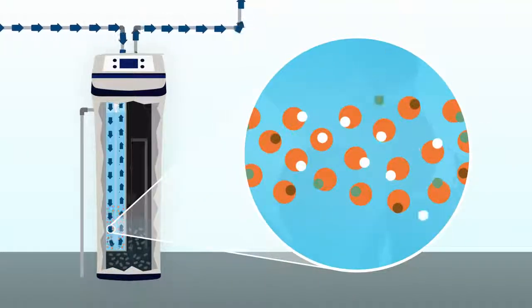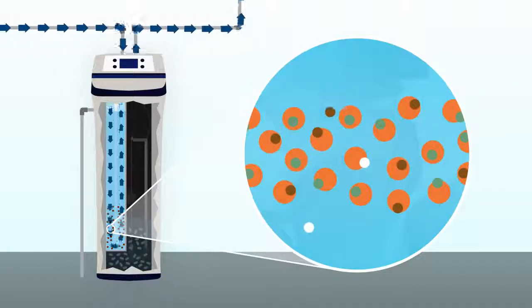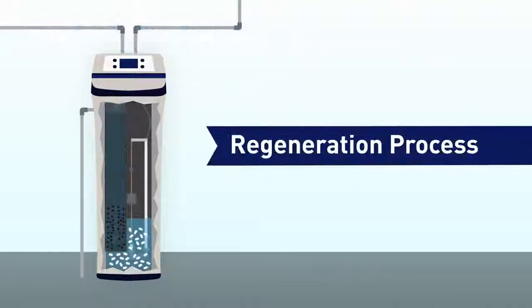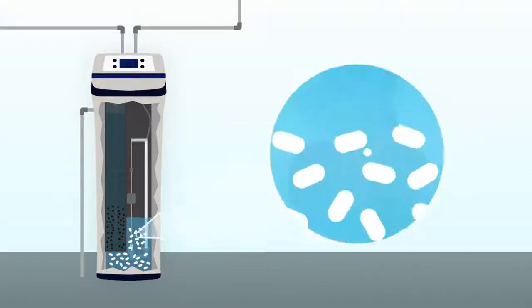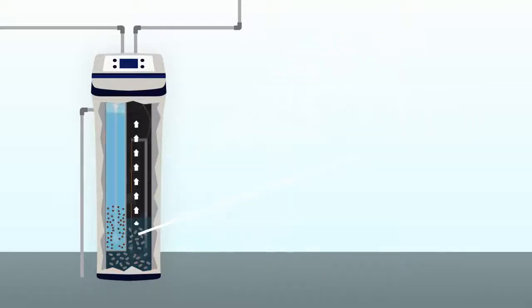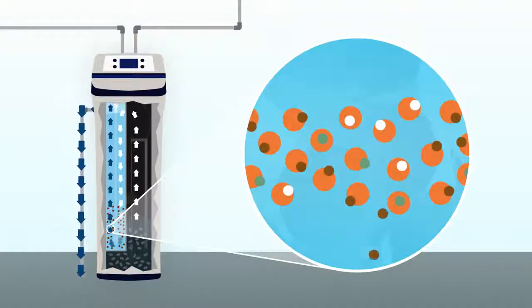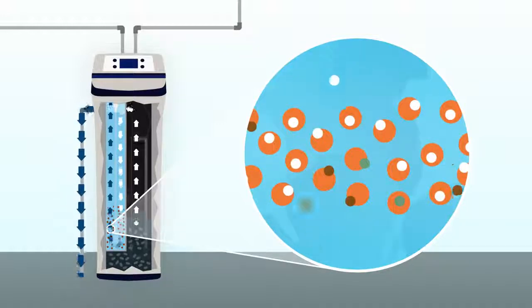When the beads are coated in calcium and magnesium, it's time to regenerate, or clean, the beads so that they can continue to work their softening magic. This is where salt comes in. The salt you add to your softener creates a brine solution that is held in a small reservoir. The brine is pumped into the resin tank to remove the hardness minerals from the beads. Once recharged, the beads are ready to soften more water.